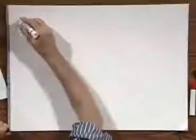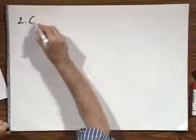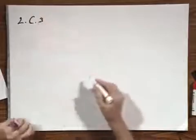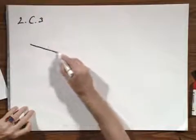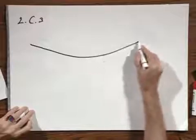All right, we go to 2C3, a tightrope walker. Here is the tightrope.